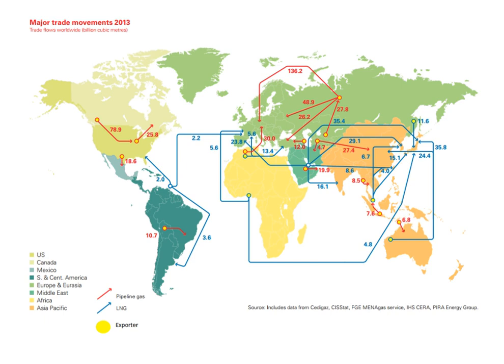Natural gas is a major feedstock for the production of ammonia via the Haber process, for use in fertilizer production. Natural gas can also be used to produce hydrogen, with one common method being the hydrogen reformer.